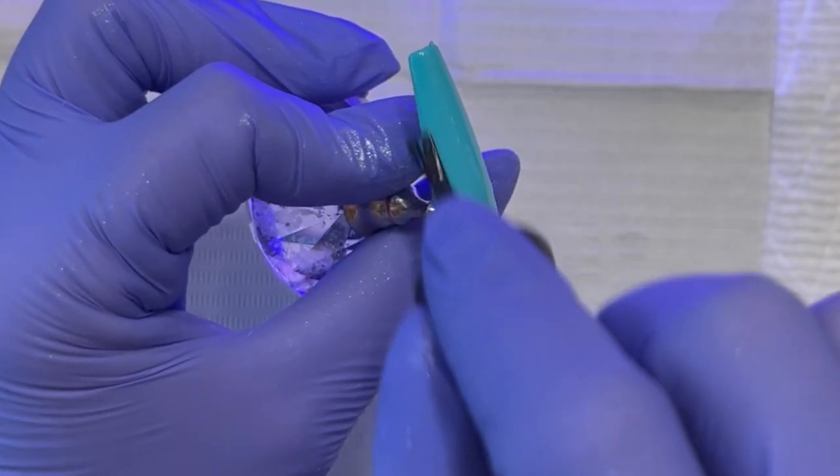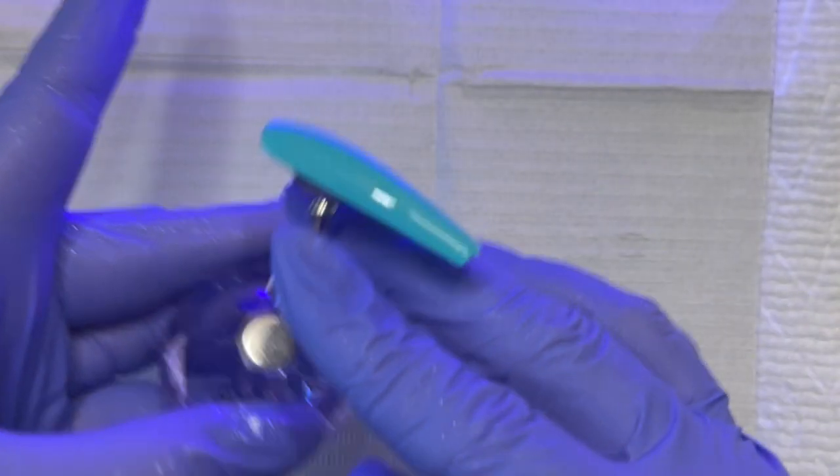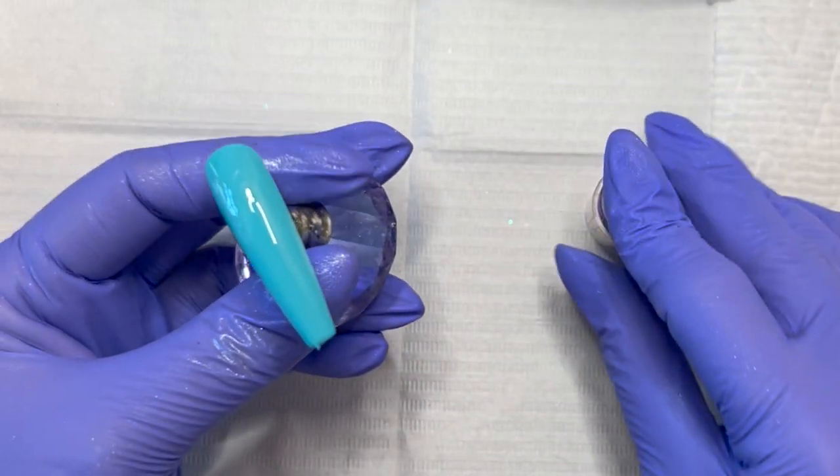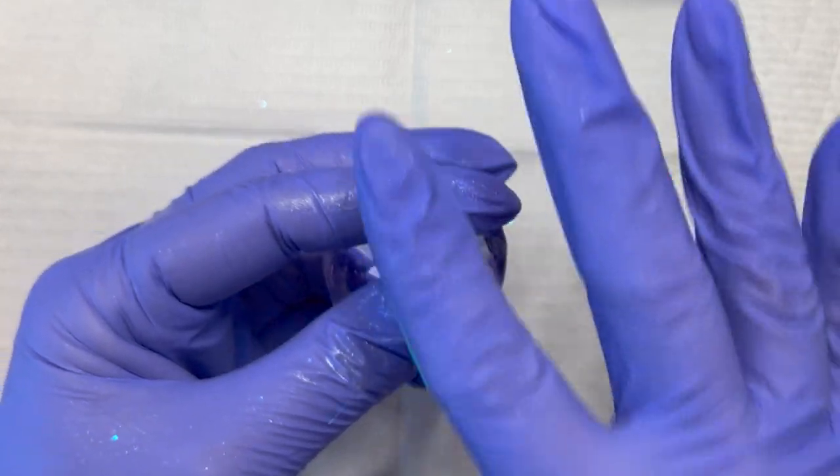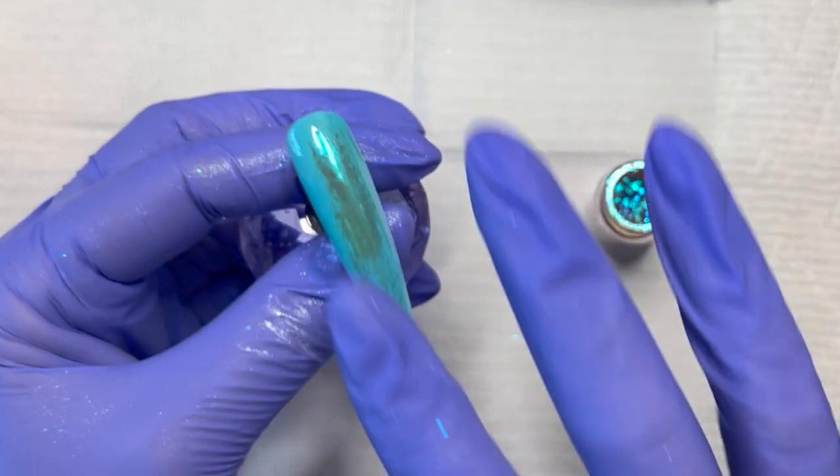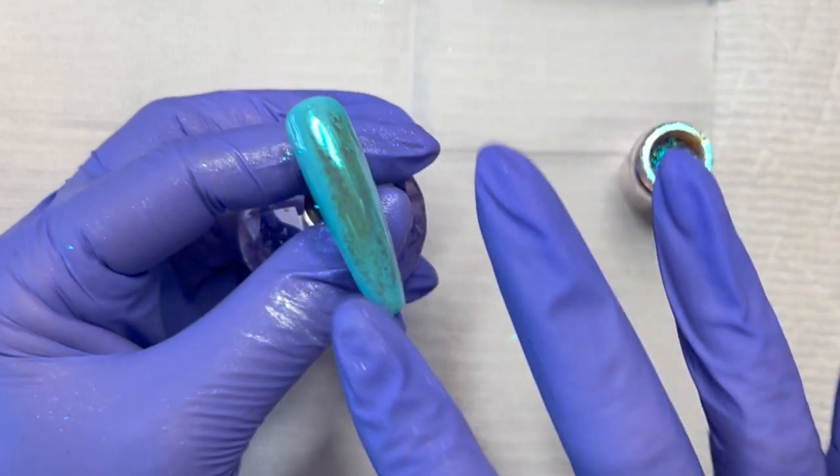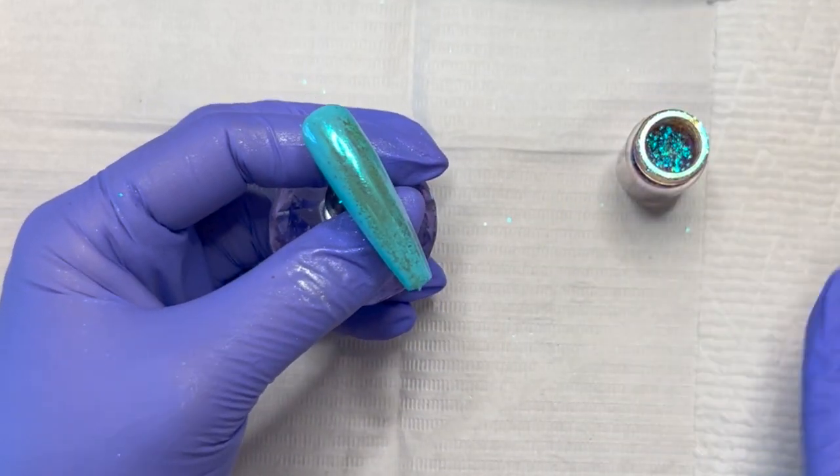And now I'm going to go back in with no-wipe top coat for the second nail. I'm going to get this in for 20 seconds, and now we're going to do the Bloom chrome flakes. Same process, just going to wipe it into, or rub it rather, into the surface of the nail.